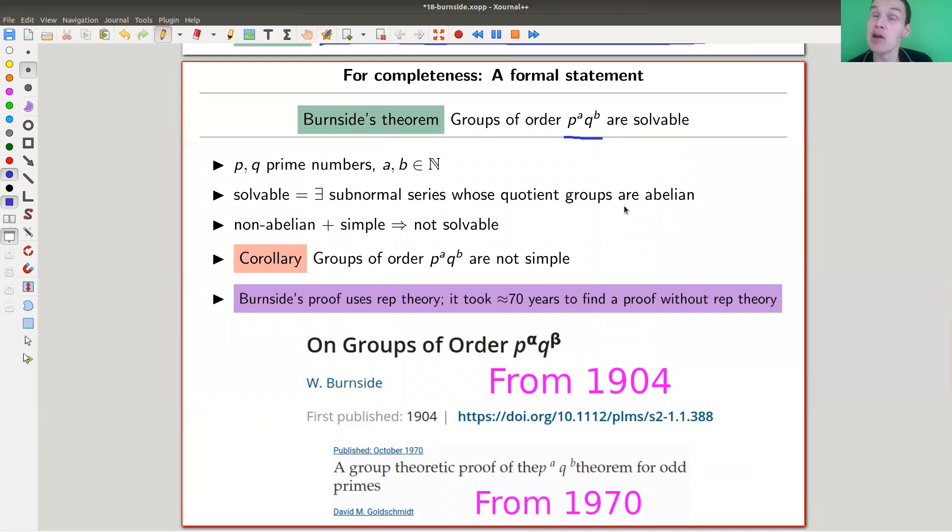That's not obvious why this should be true. This is known as Burnside's p^a q^b theorem. Actually, Burnside themselves used alpha and beta, not A and B. For me, typesetting A and B is not much harder, but I like A and B more. Anyway, you look at groups of order p^a q^b, where p and q are primes, and a and b are some natural numbers.